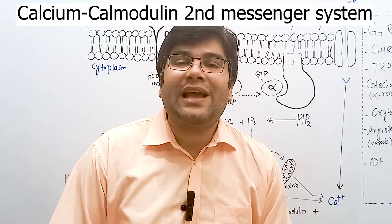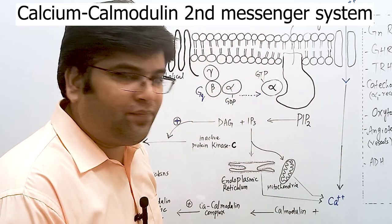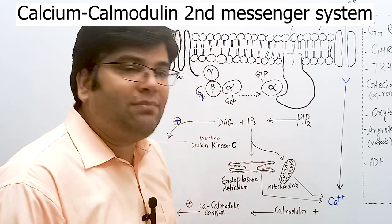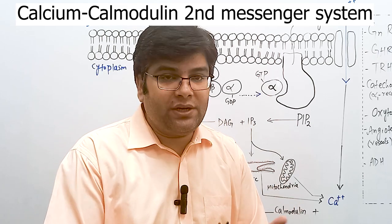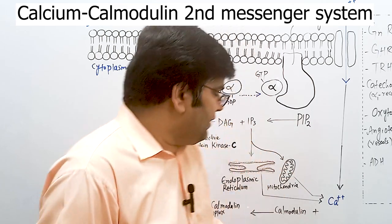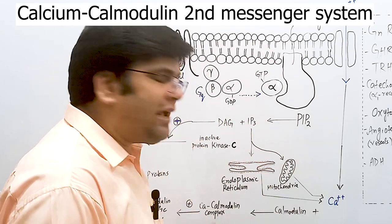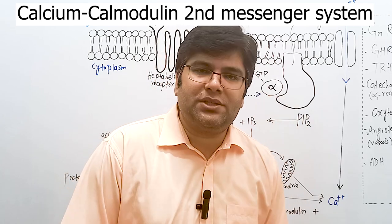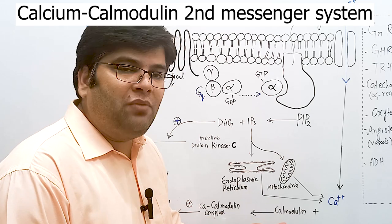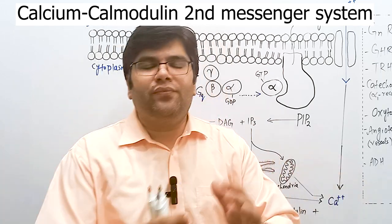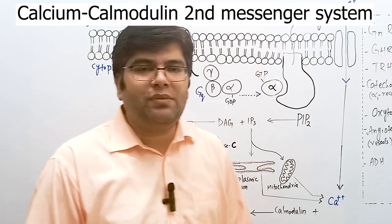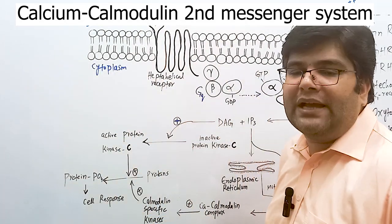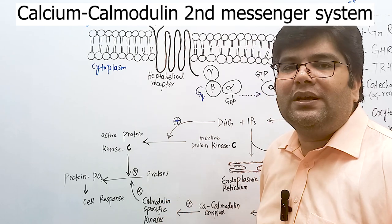Now, regarding the calcium-calmodulin second messenger system: the increased calcium in the cell, by whatever means, binds with a protein called calmodulin. Calmodulin is similar in function to troponin C in skeletal muscles. When calcium binds with calmodulin, it forms a calcium-calmodulin complex. Calmodulin has four binding sites for calcium, and when three or four sites are saturated, the calcium-calmodulin complex becomes activated. This complex can then activate specific kinases called calmodulin-specific kinases.